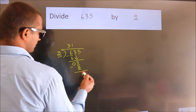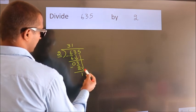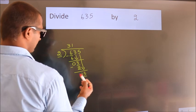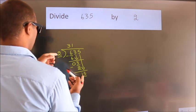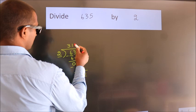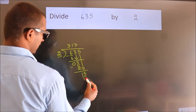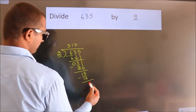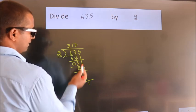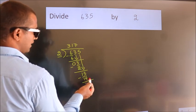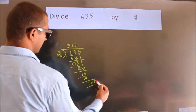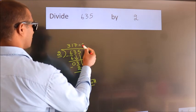After this, bring down the beside number. So, 5 down. So, 15. A number close to 15. In 2 table is 2 sevens, 14. Now, we subtract. We get 1. No more numbers to bring it down. So, we stop here. This is our remainder. This is our quotient.